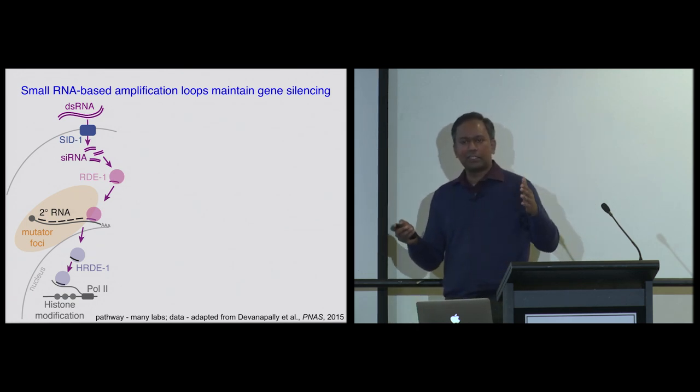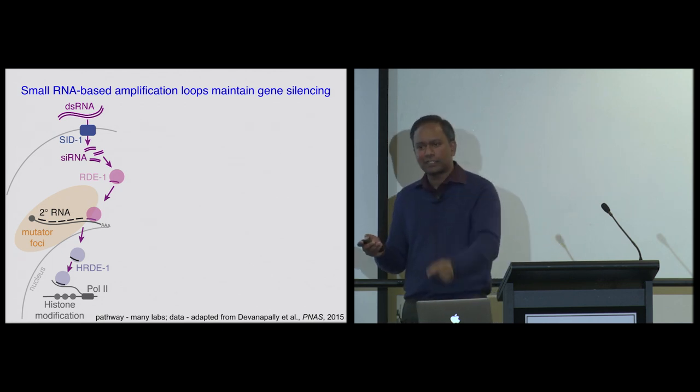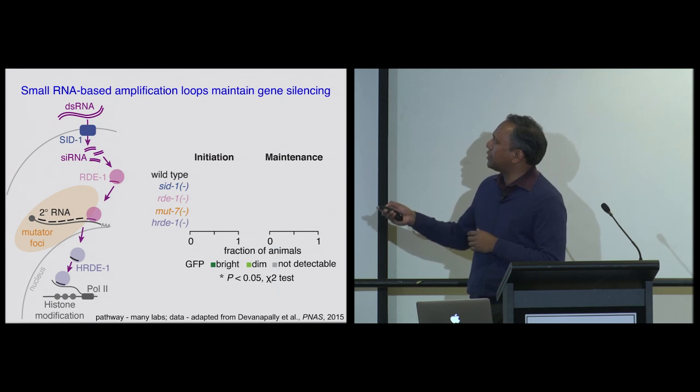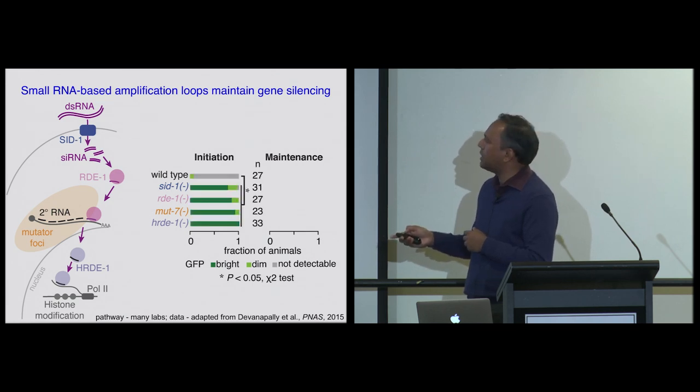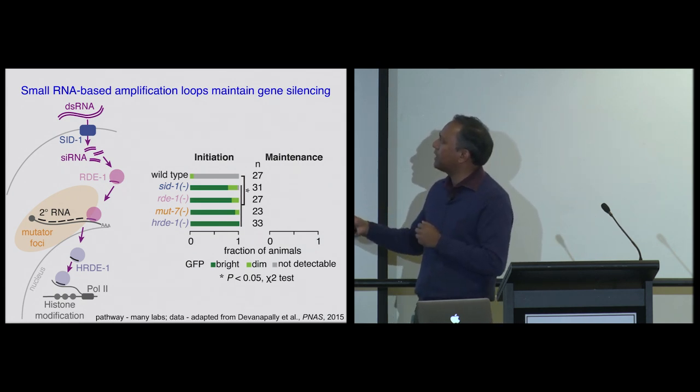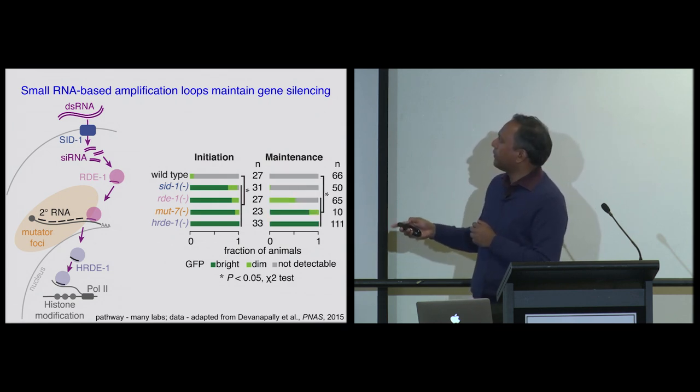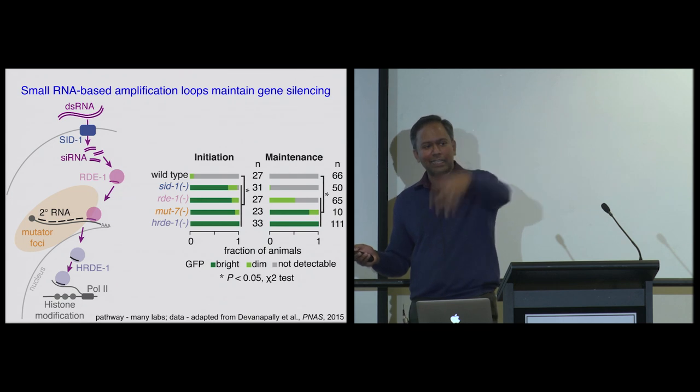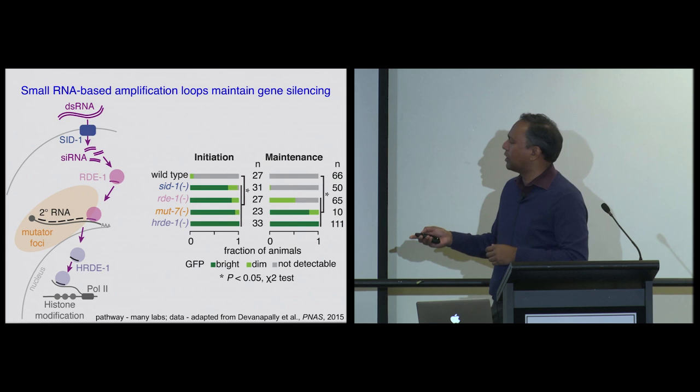So now we can ask, given the system of RNA going from neurons to the germline and then causing silencing that lasts for a long time, how do all these genes fit in? Does it make any sense? So we tested that in two steps: asking what is required for starting the whole process or initiation, and asking what is required to maintain the silencing. If you look at it in wild-type, you get complete silencing. SID-1, RDE-1, mutator foci, HRD-1, they are all required. But if you look at maintenance, now SID-1 is not required, and downstream factors, these mutator foci and HRD-1 are required. So it's as though you started off the silencing by letting in some double-stranded RNA, and then you have an amplification system that just keeps it going.